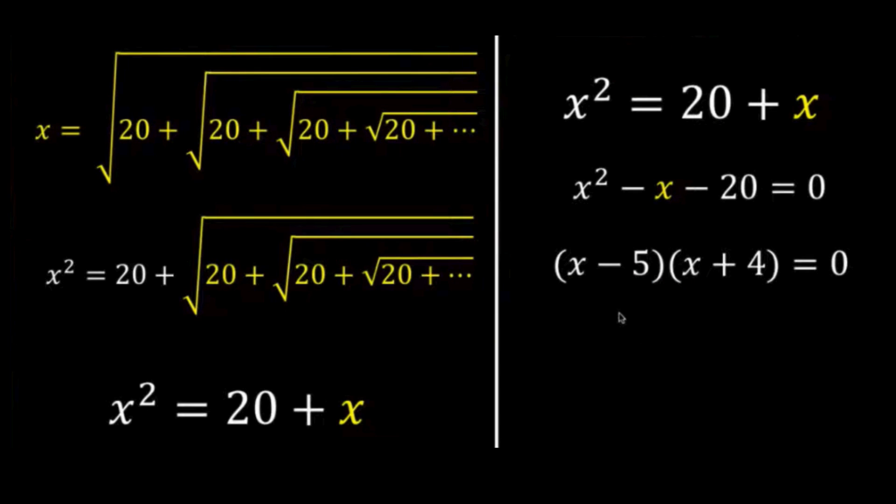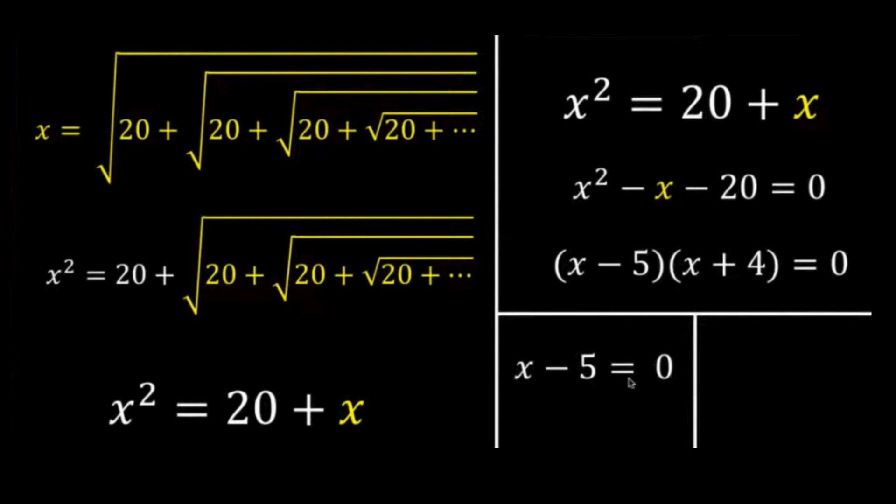So we factor that as the quantity (x - 5) times the quantity (x + 4) equals 0, and there are two possible roots here: x equals 5 or x equals negative 4.